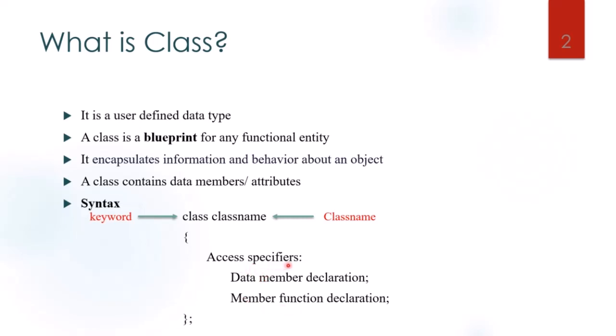An access specifier is a keyword in object-oriented programming language which sets the accessibility of the classes, methods, and other members. Access specifiers are grouped under the sections private, public, or protected. They are mainly used to denote which members are private or public. The class is terminated with a semicolon.